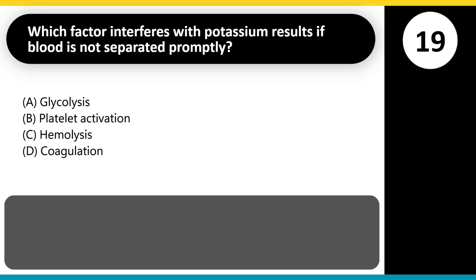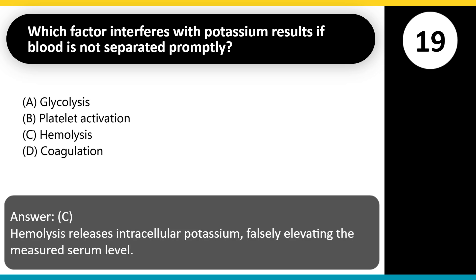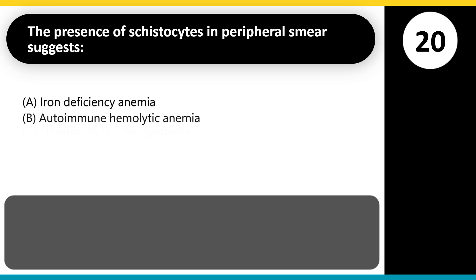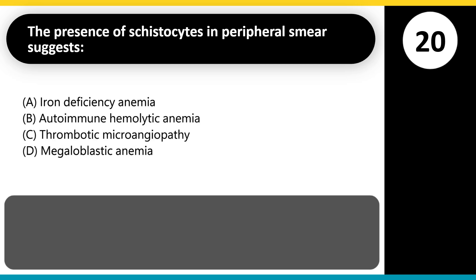Which factor interferes with potassium results if blood is not separated promptly? A. Glycolysis. B. Platelet activation. C. Hemolysis. D. Coagulation. Answer: C. Hemolysis releases intracellular potassium, falsely elevating the measured serum level.